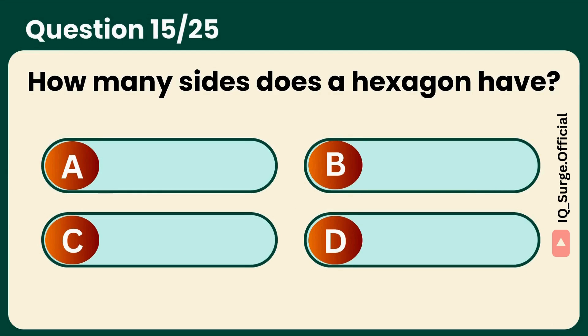How many sides does a hexagon have? Answer: 6. Geometry win unlocked.